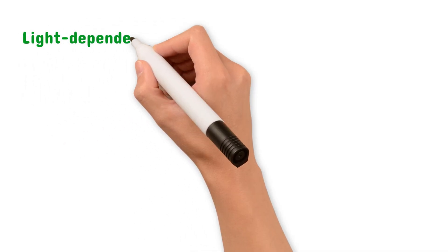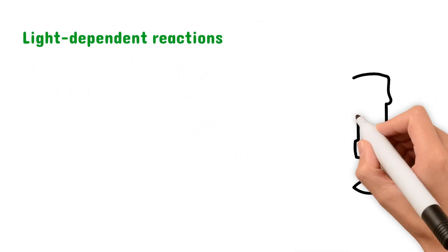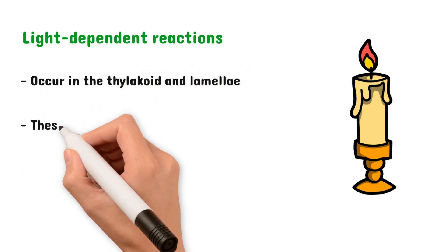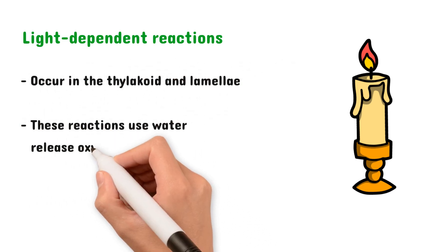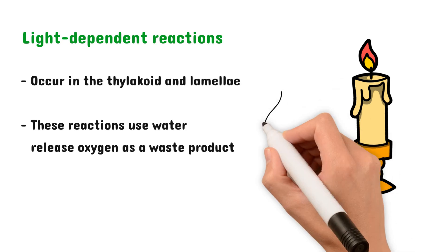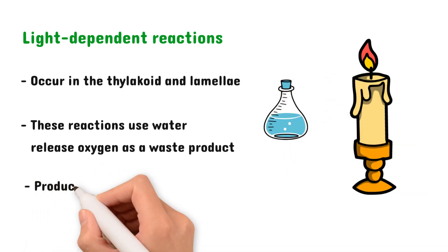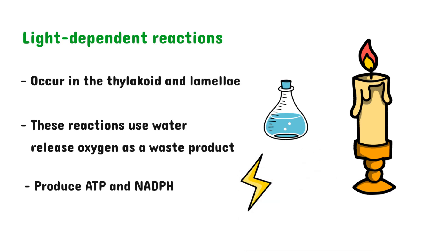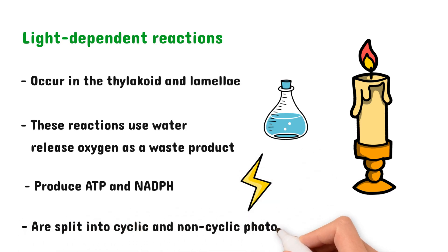Let's begin by having an overview of the light-dependent reactions. These reactions occur in the thylakoid and in the lamellae. These reactions use water and release oxygen as a waste product. They produce ATP and NADPH which are then used in the light-independent reactions and they can also be split into two stages, cyclic and non-cyclic photophosphorylation.